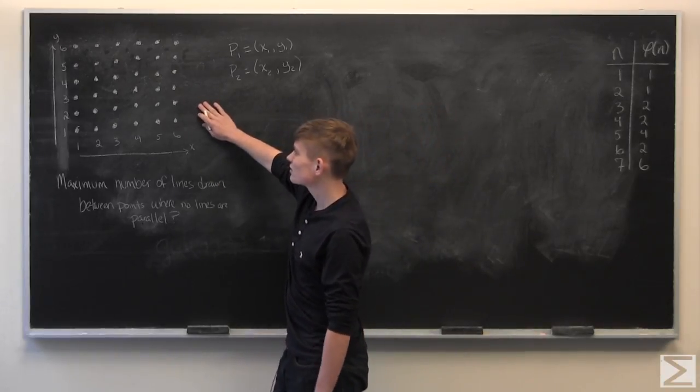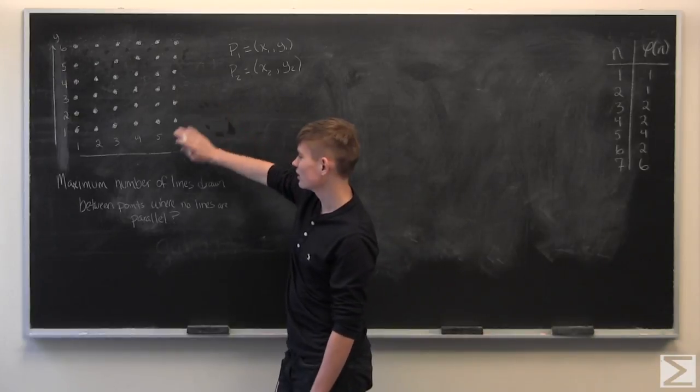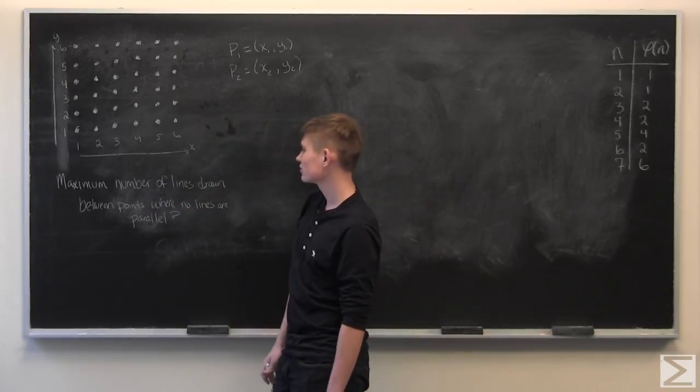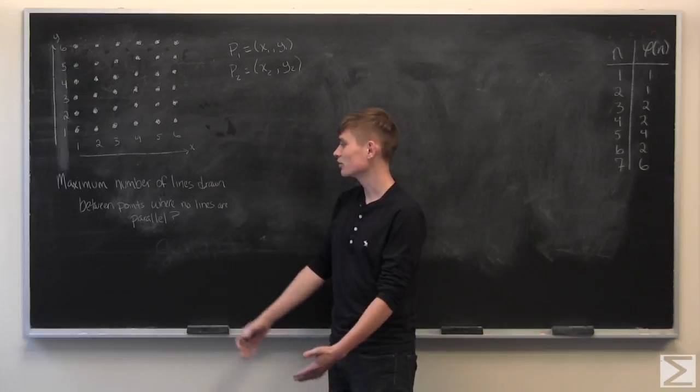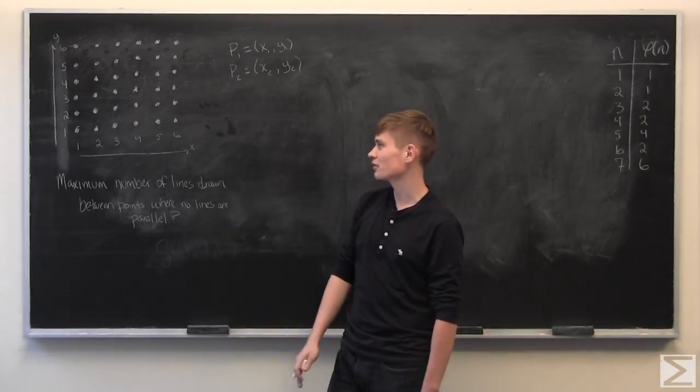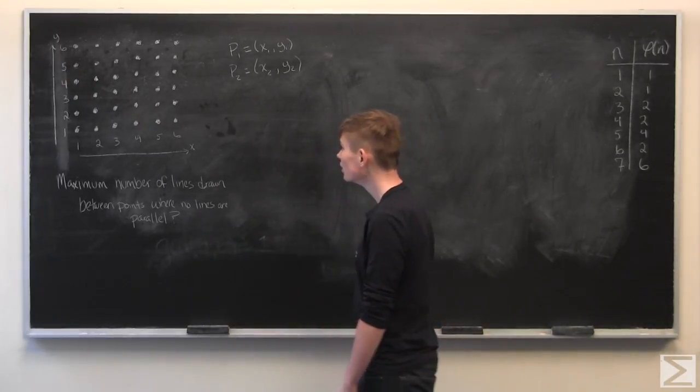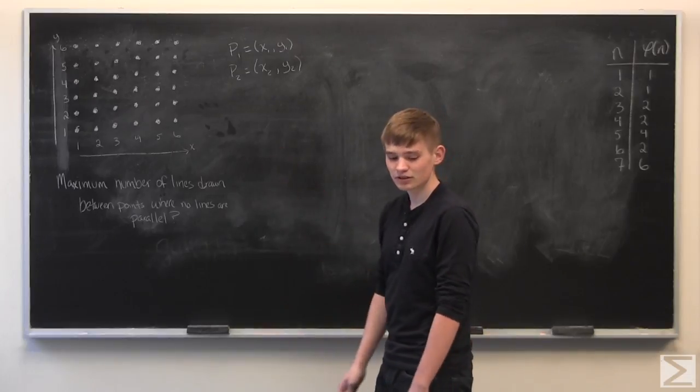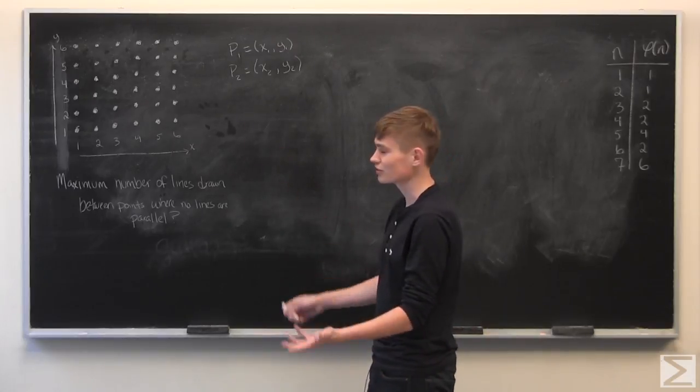given a six by six grid of dots, find the number of lines that can be drawn between points where no lines are parallel, which you would imagine is a pretty large number since there's 36 different dots.